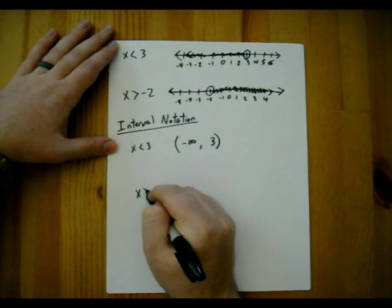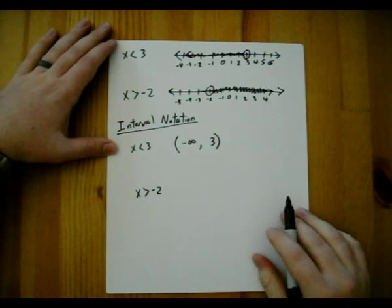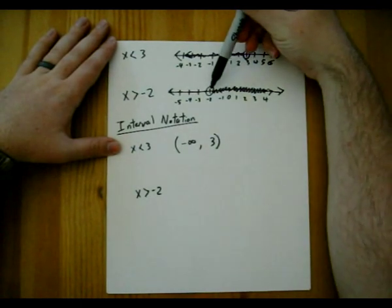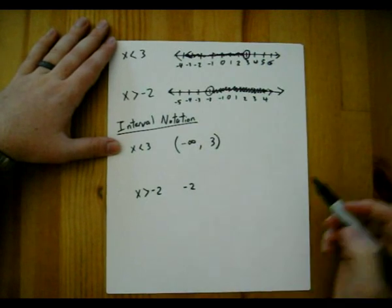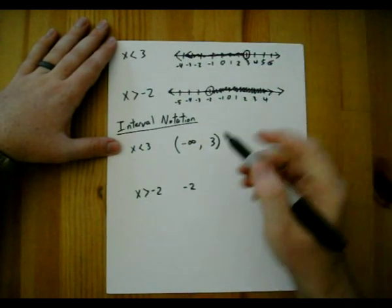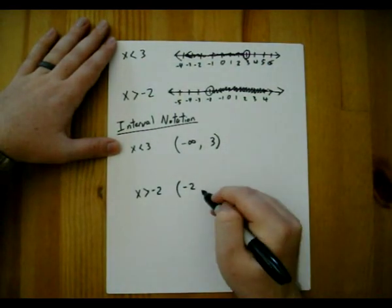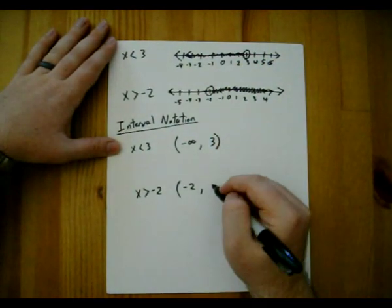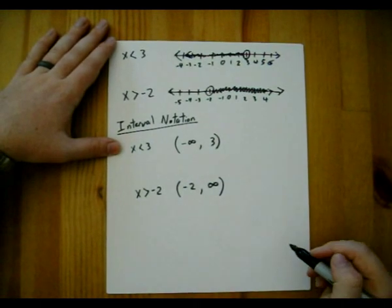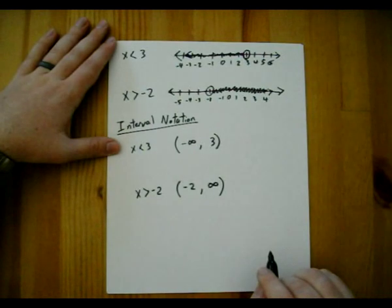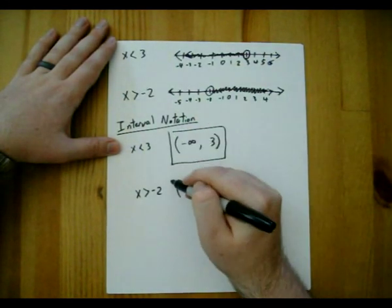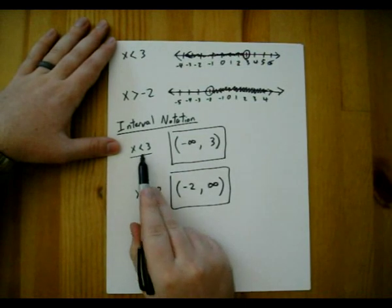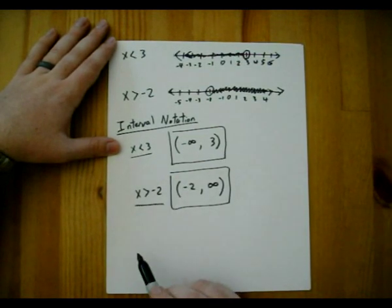Similarly, for x is greater than negative 2, we look at the leftmost endpoint first — that's negative 2. The shading goes to negative 2 but doesn't go past it, so negative 2 is our leftmost endpoint. Since we don't include it and have an open circle, we use an open bracket. The rightmost endpoint goes on forever, so instead of negative infinity we use positive infinity, again with an open bracket since infinity is not a true number. These are the interval notations for our answers.